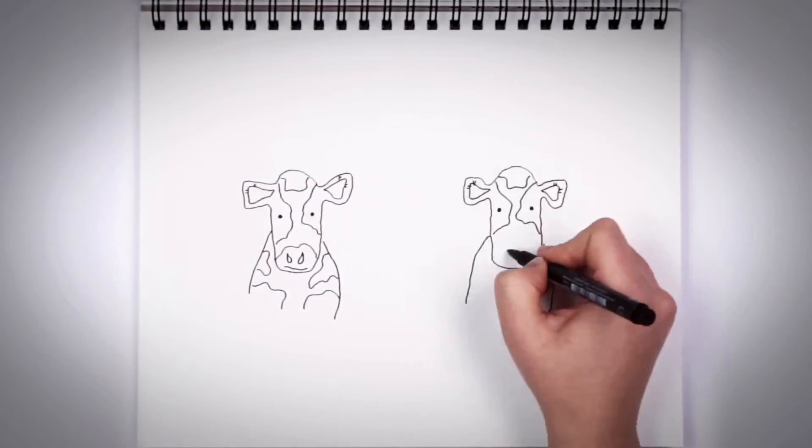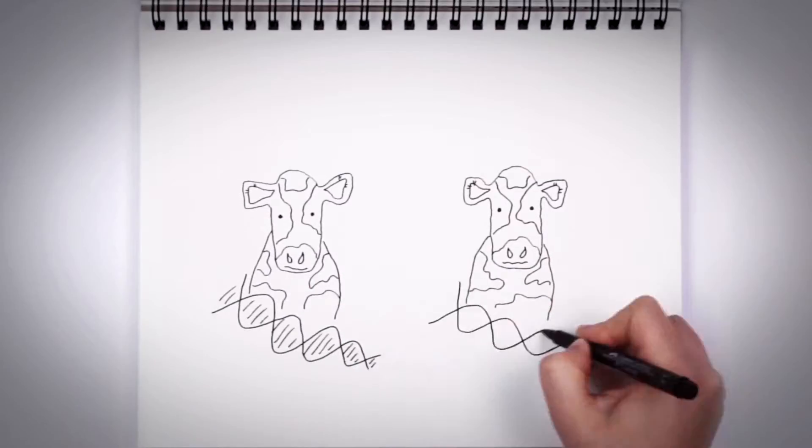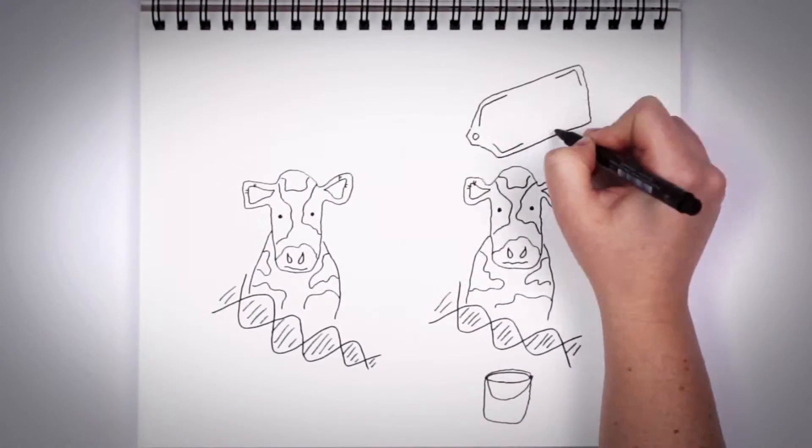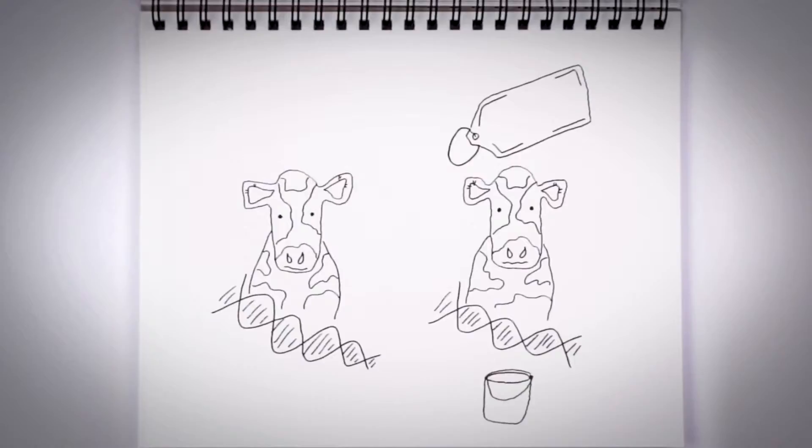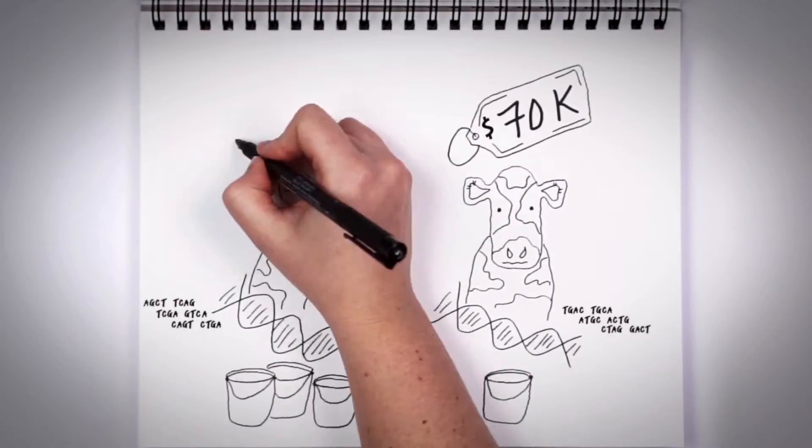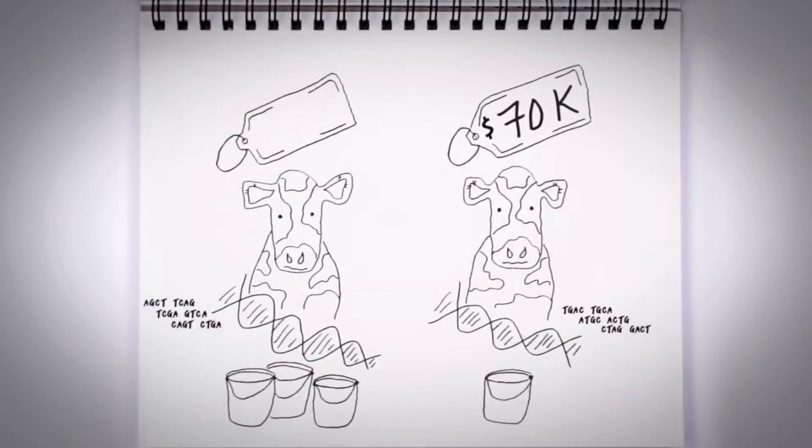For example, in dairy cows, certain genes control specific traits like milk production and fat content. Using genomics to look at the DNA of newborn calves has revolutionized the dairy industry. Producers can now determine which calves have the genes related to the traits they want. Cows with a higher genomics score produce more milk and demand higher prices at auction, sometimes as much as double.